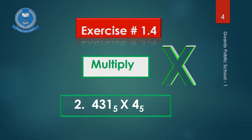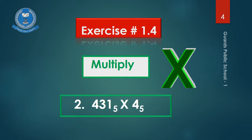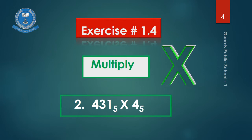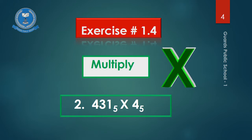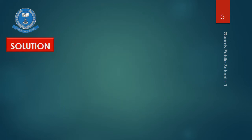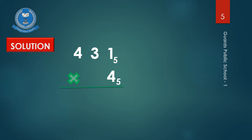Exercise No. 1.4, multiply. Question No. 2 is 431 with base 5 multiplied by 4 with base 5. In order to perform this multiplication, write down 431 with base 5 and 4 with base 5. Now sign of multiplication and draw a line. Now multiply 4 by 1: 4 times 1 is 4. Write down 4. Now multiply this 4 by 3: 4 times 3 is 12.